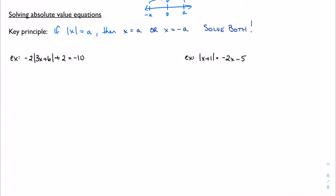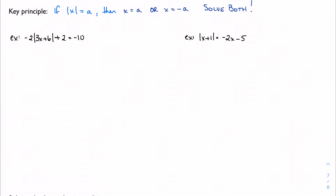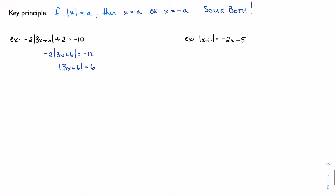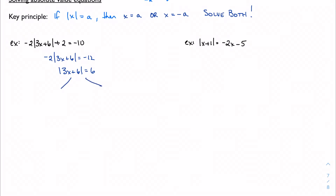Before we get to that point, all our equation-solving skills from before are still valid. Looking at this first example, I'm going to subtract two, then divide by negative two — nothing fancy yet. Now that I'm left with the absolute value, I apply the rule: this gives me two cases. Either the equation stays exactly as it is, or I take the opposite of the right-hand side. Solving both gives me zero in one case and negative four in the other.